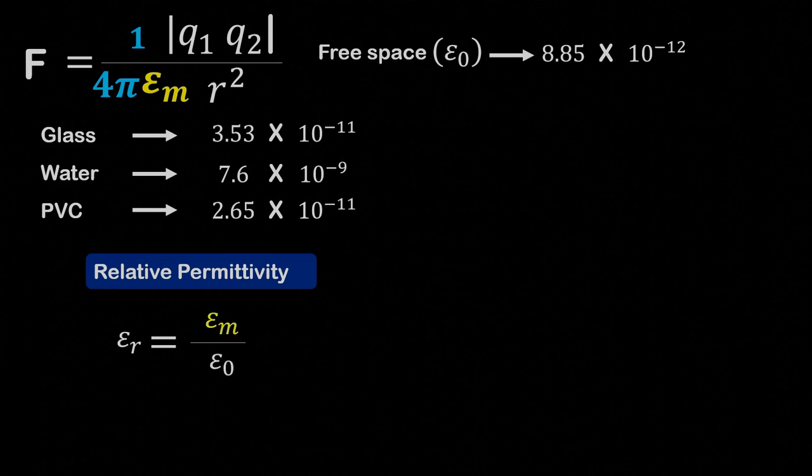Since the permittivity of free space is the lowest possible value, the permittivity of any medium can never be lower than epsilon 0. Therefore, we can say that the relative permittivity will always be greater than 1.